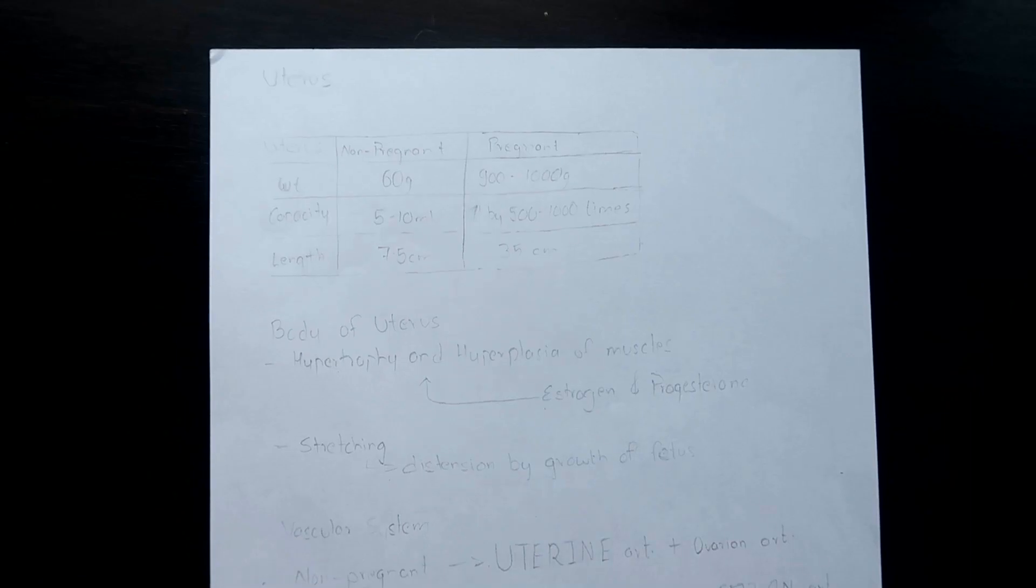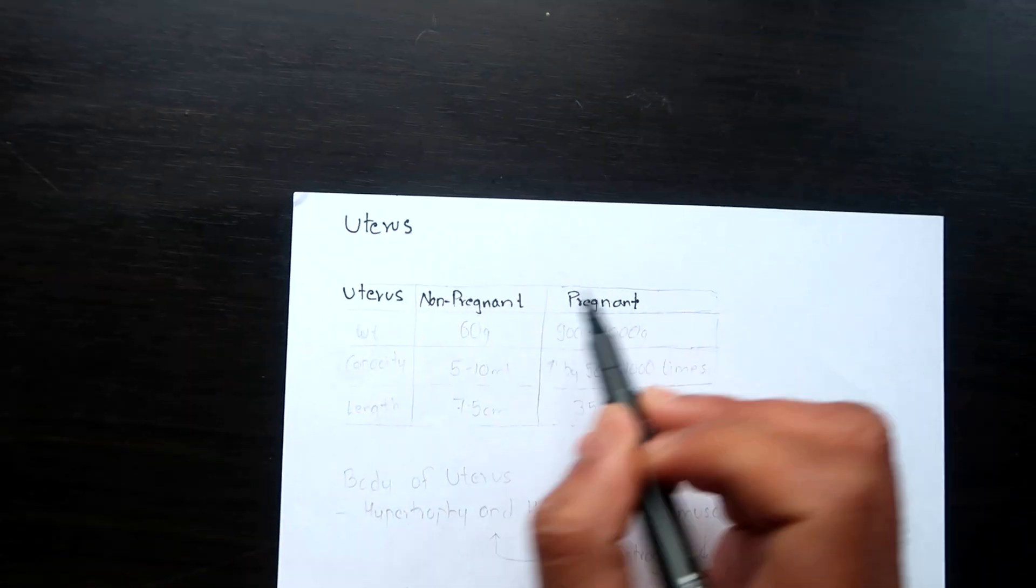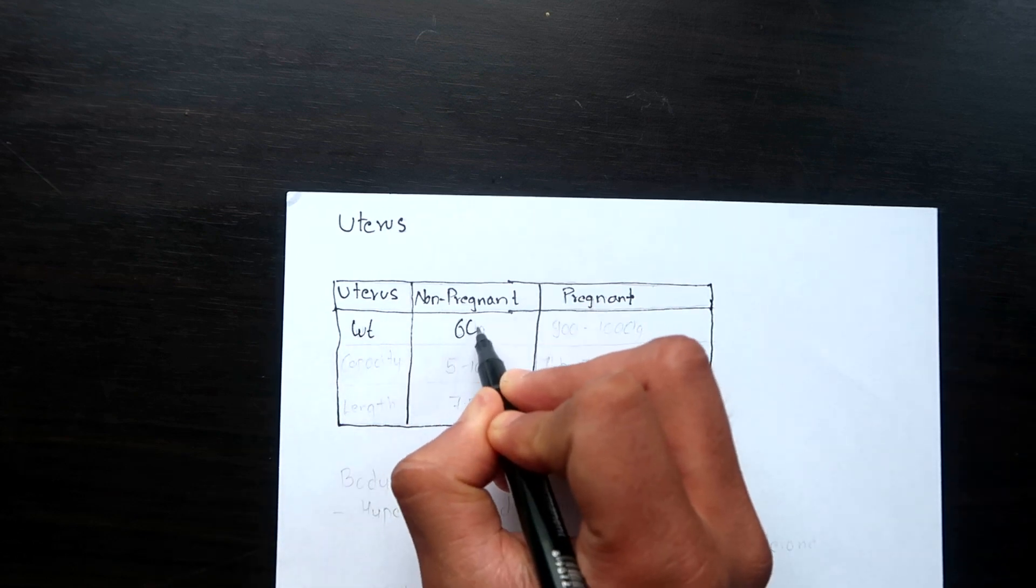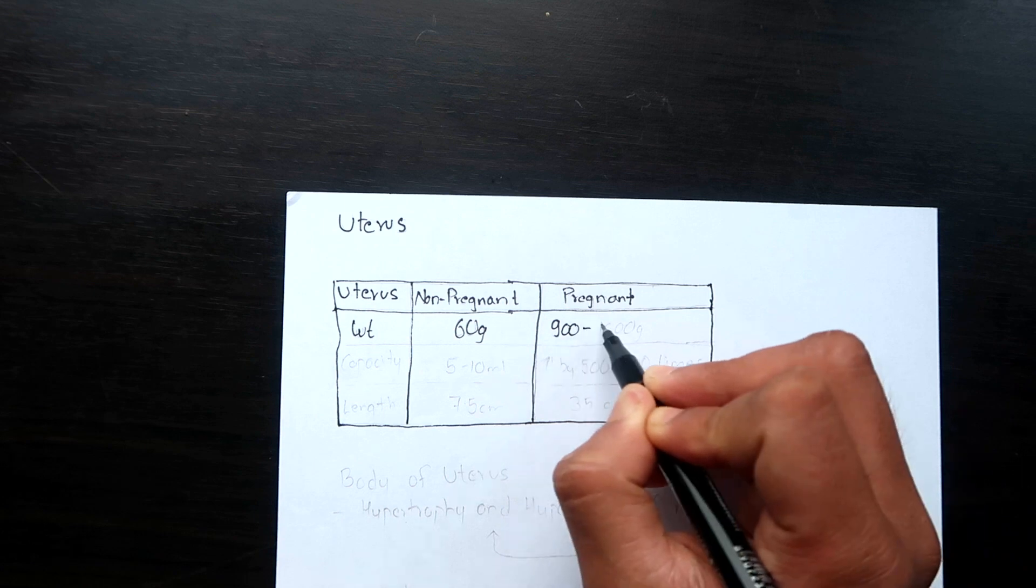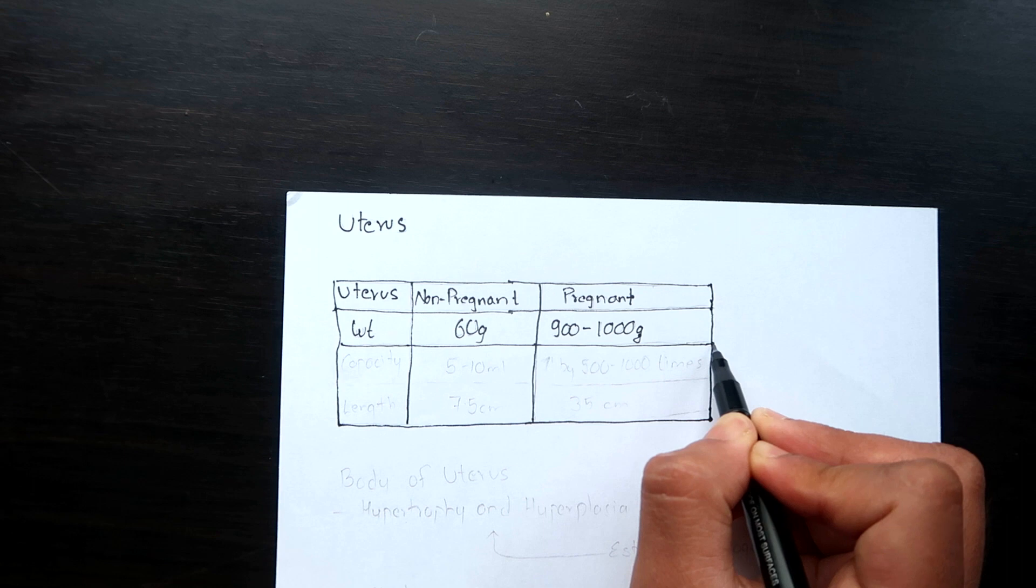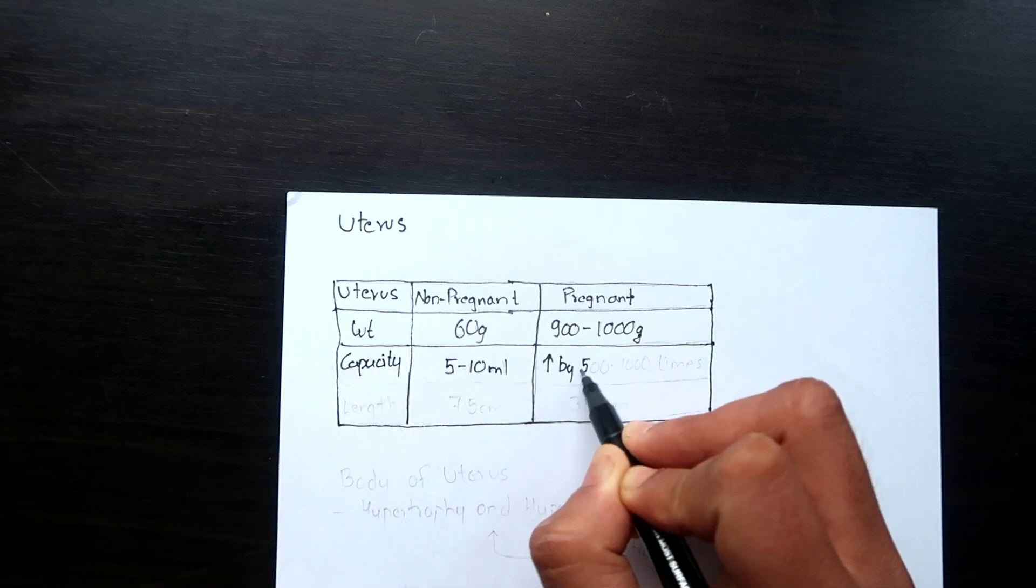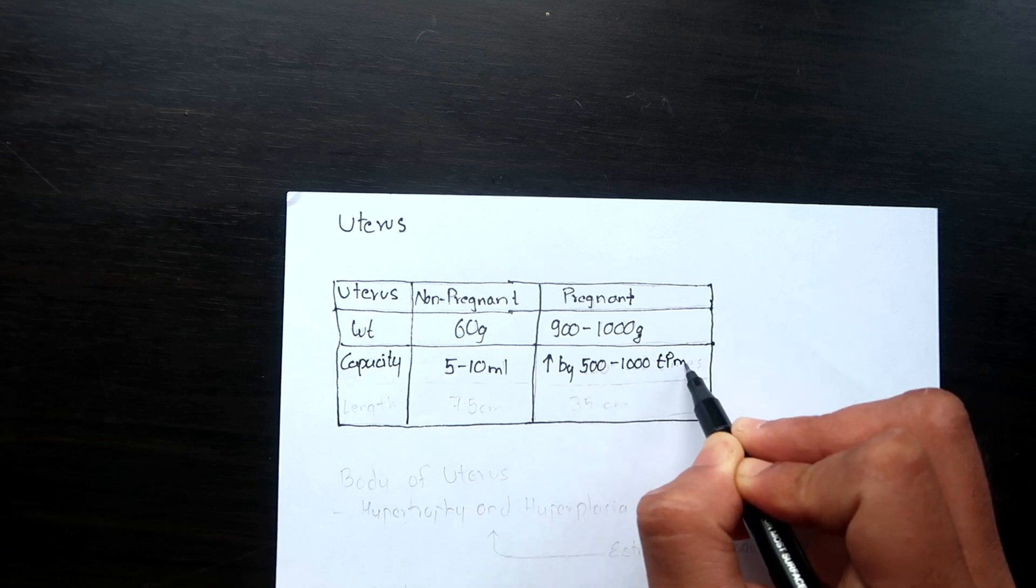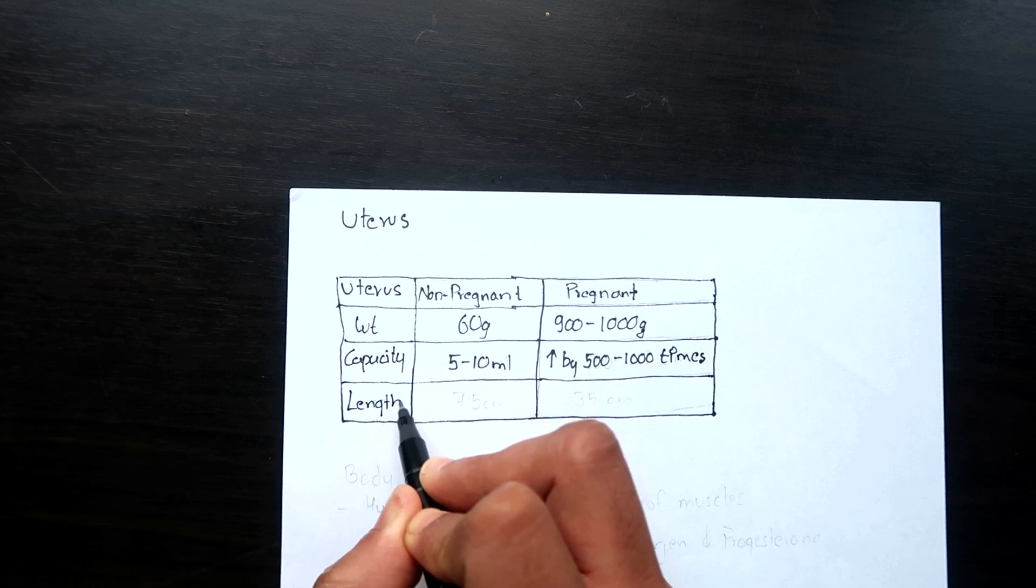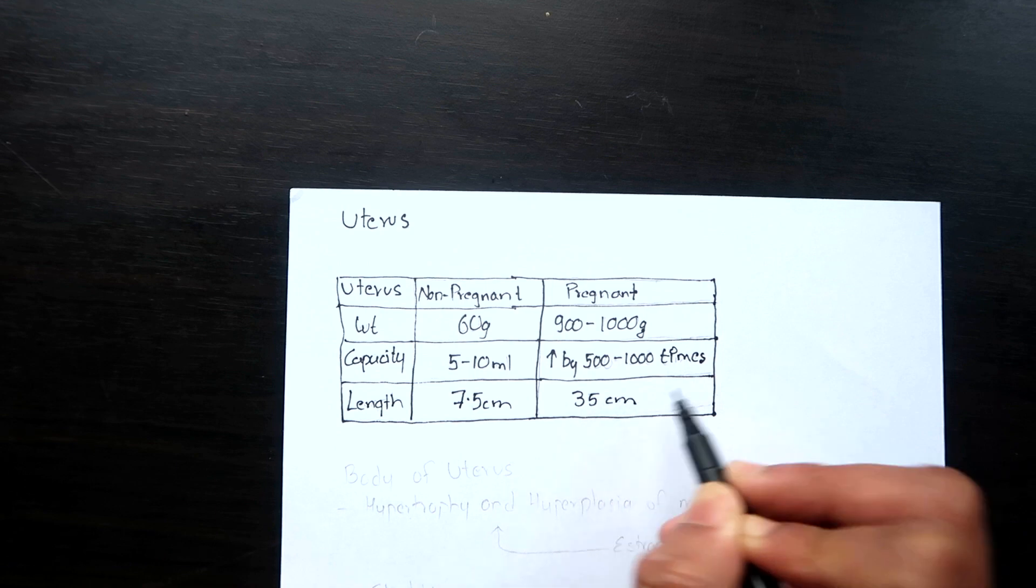Now let's talk about the changes in the uterus. There is enormous growth of the uterus during pregnancy. The uterus which in non-pregnant state weighs about 60 grams increases up to 900 to 1000 grams. The capacity in non-pregnant is 5 to 10 ml and this increases by 500 to 1000 times in the pregnant state. The length of 7.5 cm in non-pregnant increases by 5 times to around 35 cm in pregnant.